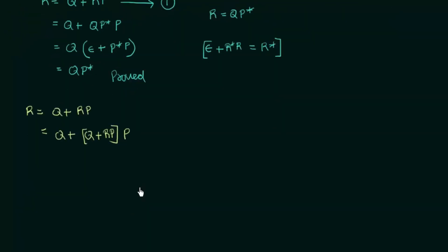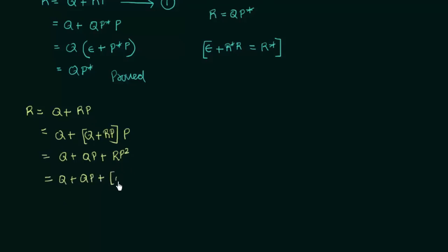Expanding, this becomes q + qp + rp·p, which gives q + qp + rp². We still have an r, so let me replace this r also with q + rp. So we get: q + qp + (q + rp)p², which becomes q + qp + qp² + rp³.